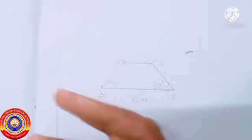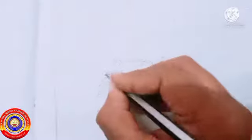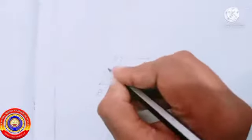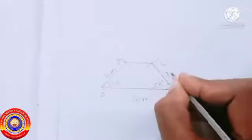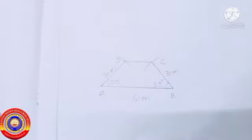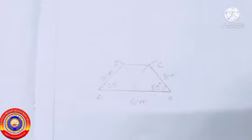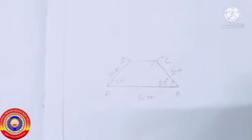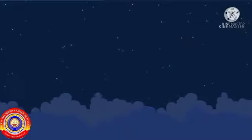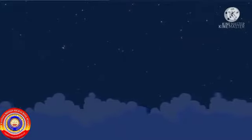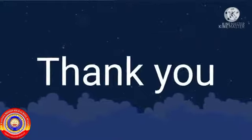Thus we get the required trapezium with adjacent sides six centimeter and three centimeter and the angle between them 50 degrees. In the next class we will discuss more questions related to trapezium. That's all for today, thank you.